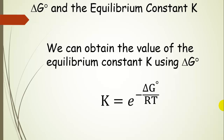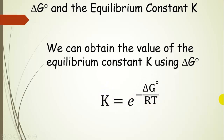If we want the equilibrium constant from a delta G value — say we calculated delta G naught, the free energy under standard conditions — if we divide it by the gas constant times T and take e to the negative of that quantity, then we're going to get the equilibrium constant K for that reaction.